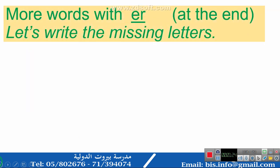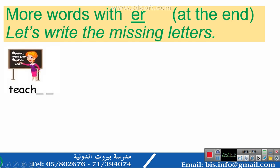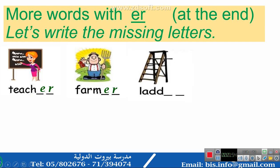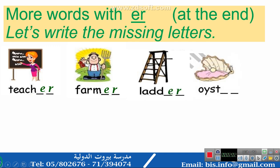More words with the ER sound at the end. Let's write the missing letters. Look at this picture. Who's this? That's a teacher — ER. Who's that? That's a farmer — ER. What's this? This is a ladder — ER. And what's this? This is an oyster — ER.